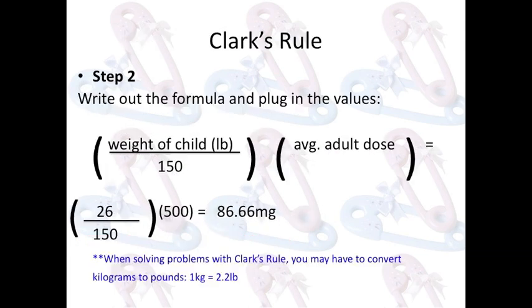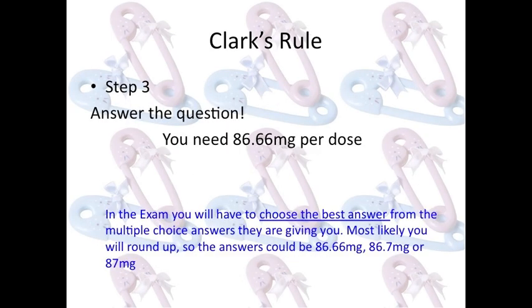Step two: write out the formula and plug in the values. The formula is weight of child divided by 150, times the average adult dose. When you plug in the values, you get 26 divided by 150, times 500, which equals 86.66. When solving problems with Clark's Rule, you may have to convert kilograms to pounds — one kilogram equals 2.2 pounds.